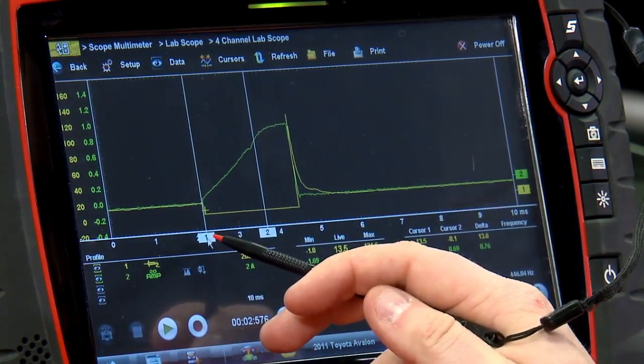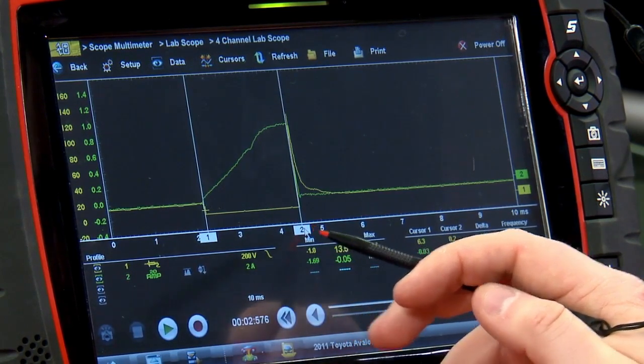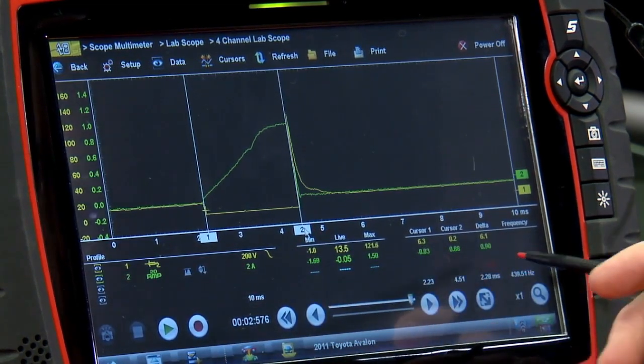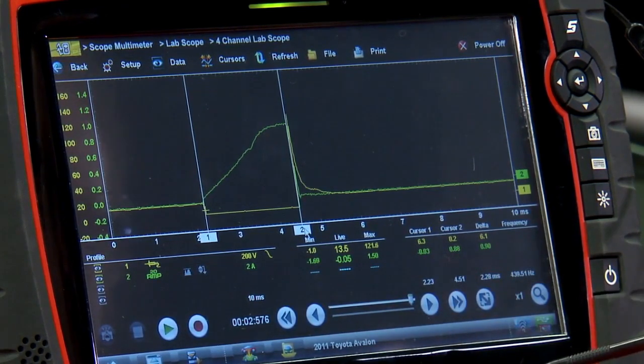So if I take cursor one, put it there, cursor two, and put it at the end of that ground period, that's going to give us our injector pulse width. So 2.28 milliseconds in this case.